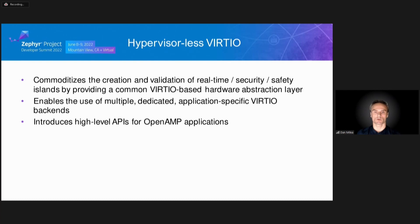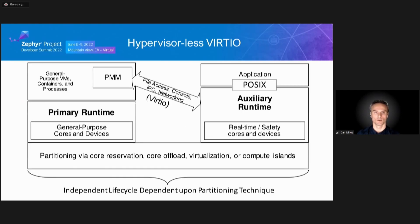While not meant to be an exhaustive list, the following scenarios are a good fit for deploying hypervisor-less VirtIO. It commoditizes the creation and validation of compute islands by providing a common VirtIO-based hardware abstraction layer. It enables the use of multiple dedicated application-specific VirtIO backends, and it introduces high-level APIs for OpenAMP applications. This is a general overview of the hypervisor-less VirtIO architecture. Some devices can be assigned exclusively to one of the runtimes, but VirtIO provides the infrastructure for communication and resource sharing between runtimes. Applications use standard APIs to communicate, for example socket APIs over virtual sockets.